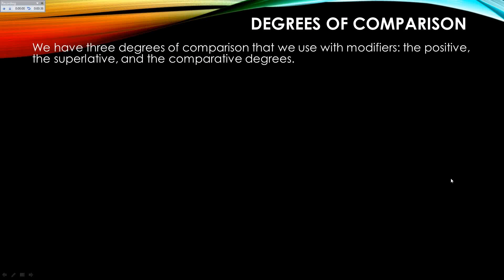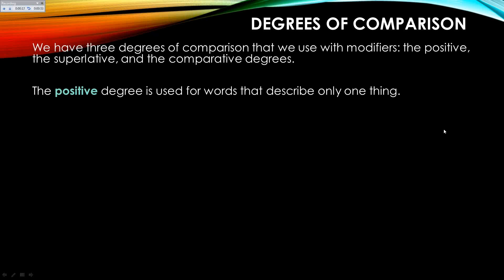We have three degrees of comparison that we use with modifiers. The names of those are the positive, superlative, and comparative degrees. You do not have to know the names of them except when you and I are talking about them together, but you do have to know what happens with them.